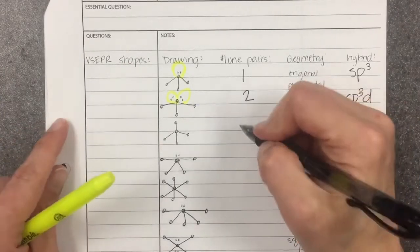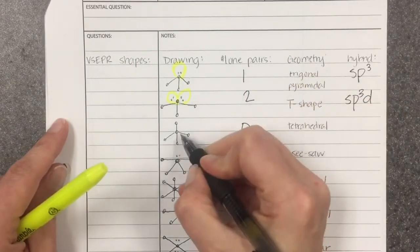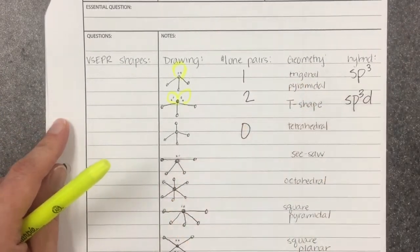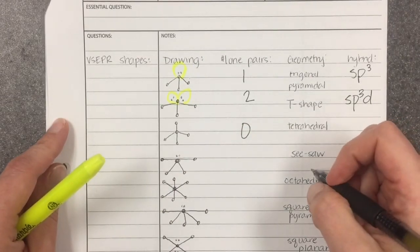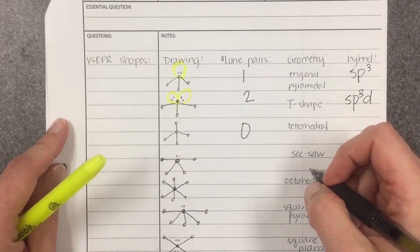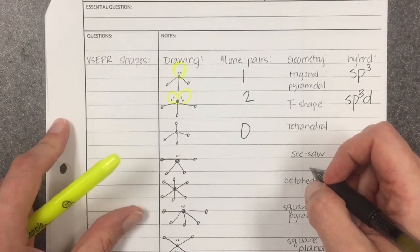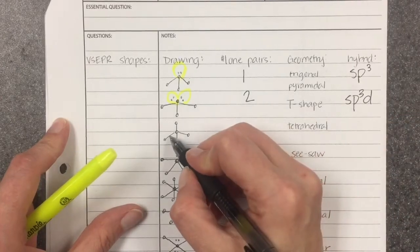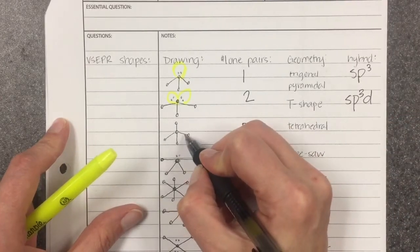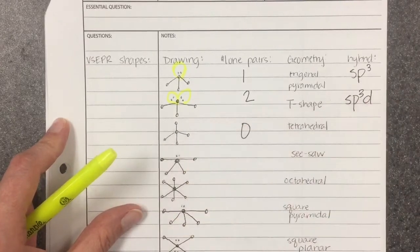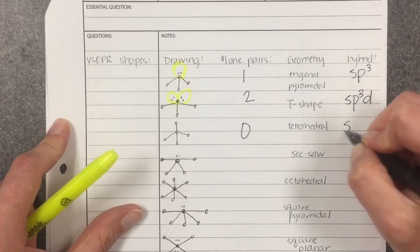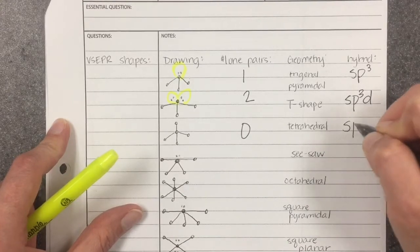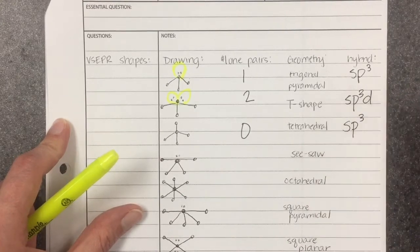Looking at the next one, there are no lone pairs of electrons — just four terminal atoms — and so it makes itself into a tetrahedral shape. Since there are four bonds, I need four orbitals: an S and three P's will work. So the hybridization is SP3.